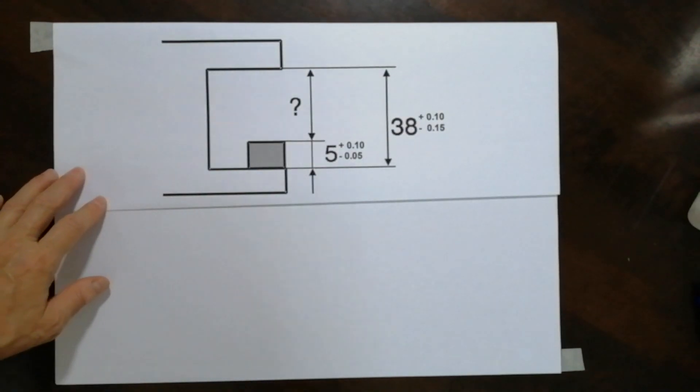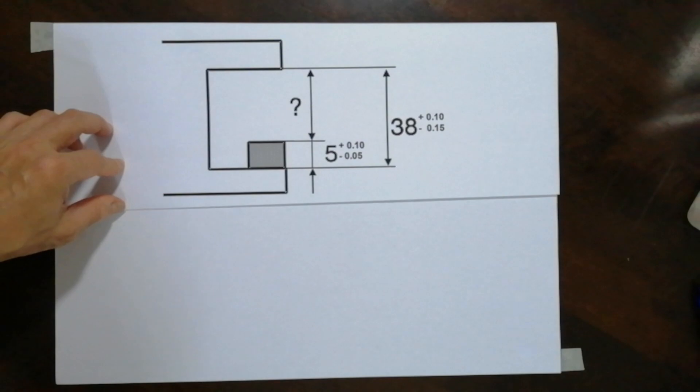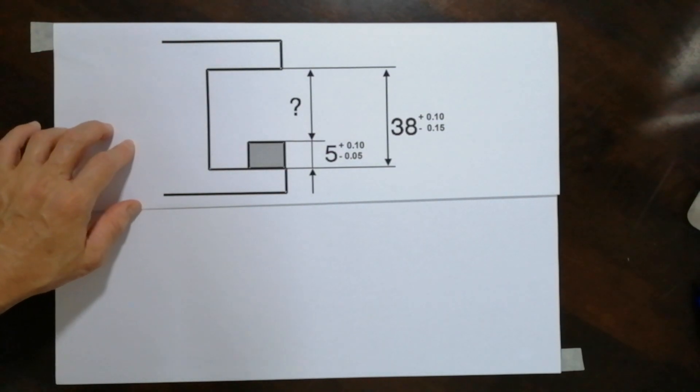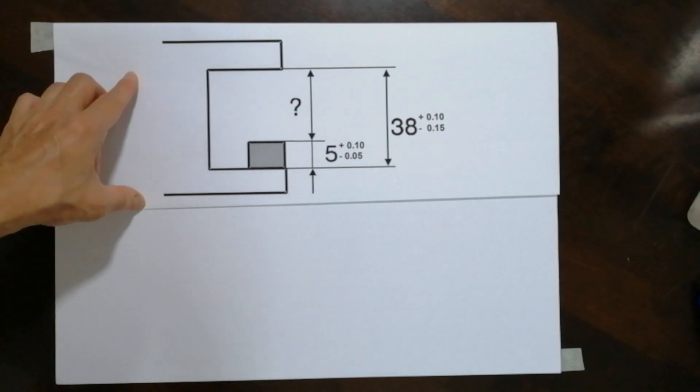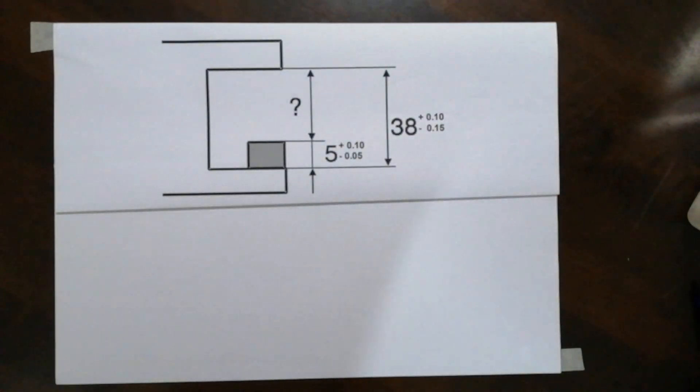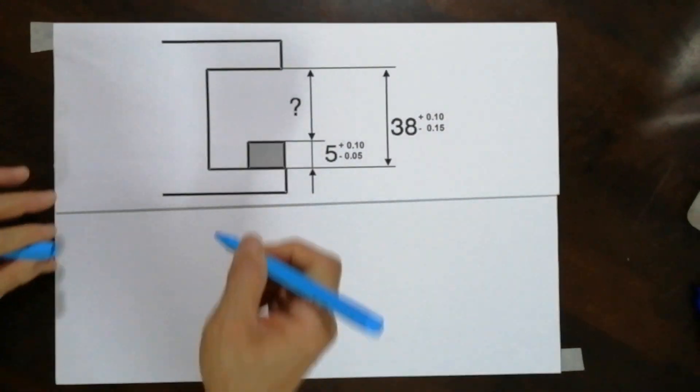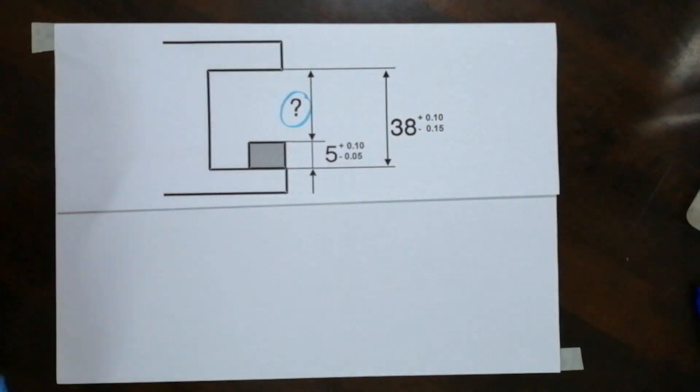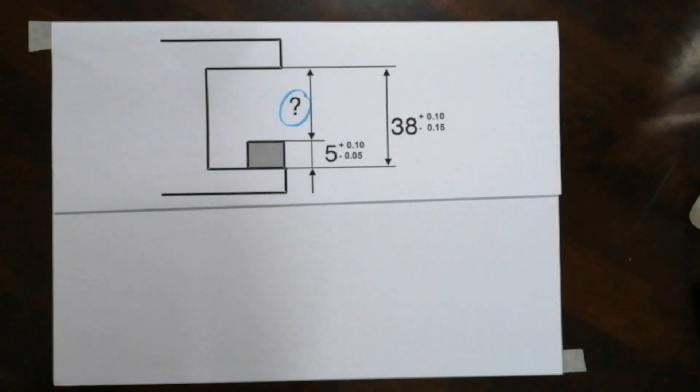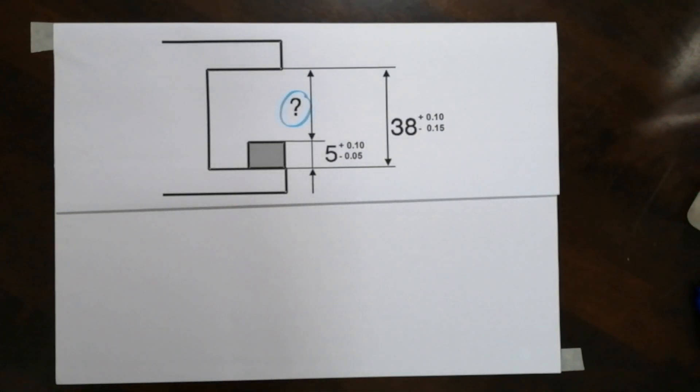Okay, welcome back. I think the last example wasn't very clear, so I'm going to use another example here. I want to find the dimension that is identified by the question mark. What is this dimension? How are we going to combine two dimensions? You know that this time I'm not going to add them, I'm going to subtract them, and I'm going to explain to you the approach.